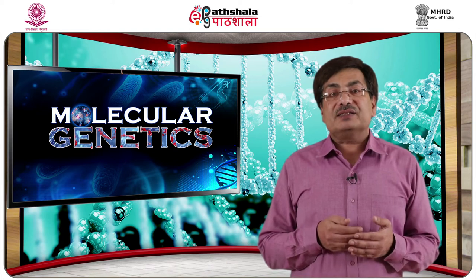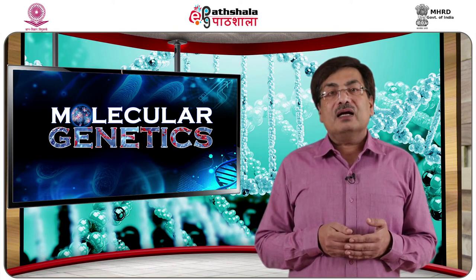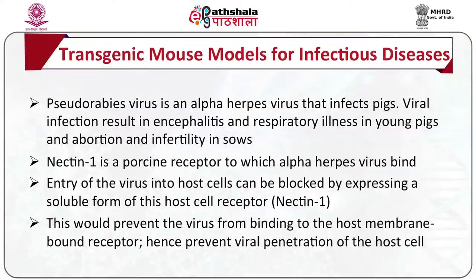Many infectious disease models have also been created in mice. Pseudorabies virus is an alpha herpesvirus that infects pigs, causing encephalitis and respiratory illness in young pigs and abortion and infertility in sows. Nectin-1 is a porcine receptor to which alpha herpesvirus binds. Entry of the virus into the host cell can be blocked by expressing a soluble form of the host cell receptor, Nectin-1, preventing the virus from binding to membrane-bound receptors and thus preventing viral entry.